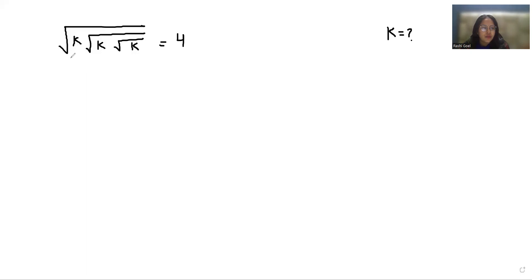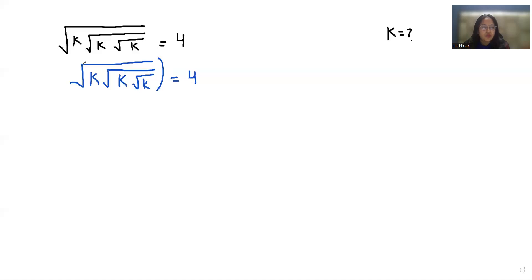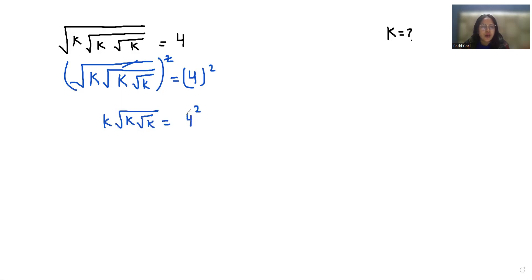I'm going to start by copying the question. Now I'm going to do squaring on both sides. With the help of this square, the square root eliminates. So we get: k times under square root k, under square root k, equals 4 squared.